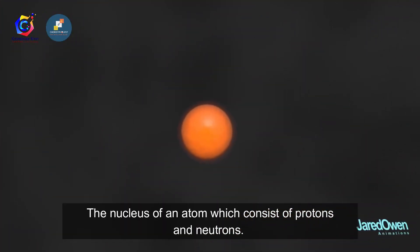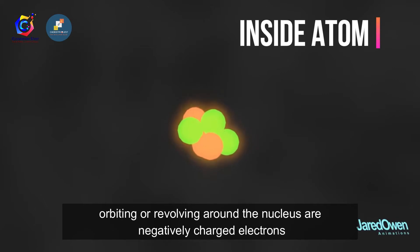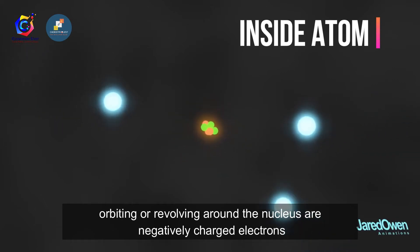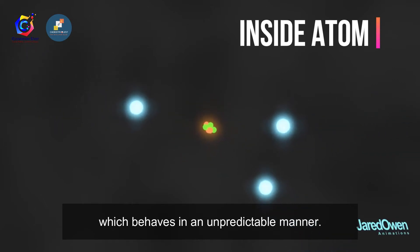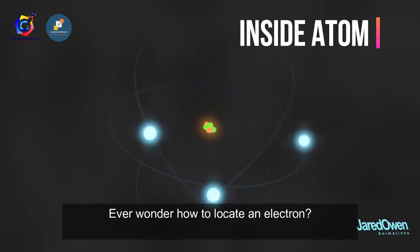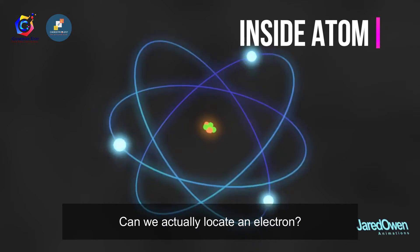The nucleus of an atom consists of protons and neutrons. Orbiting or revolving around the nucleus are negatively charged electrons, which behave in an unpredictable manner. Ever wonder how to locate an electron? Can we actually locate an electron?